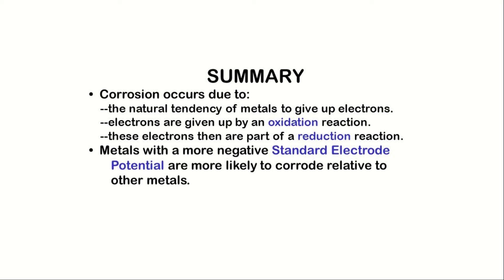Summary of corrosion: corrosion occurs due to the natural tendency of metals to give up electrons. Electrons are given up by an oxidation reaction, and these electrons then take part in a reduction reaction. Metals with more negative standard electrode potential are more likely to corrode relative to other metals.